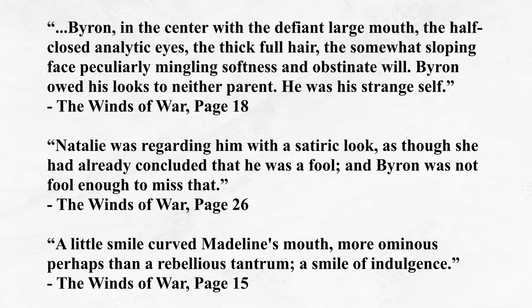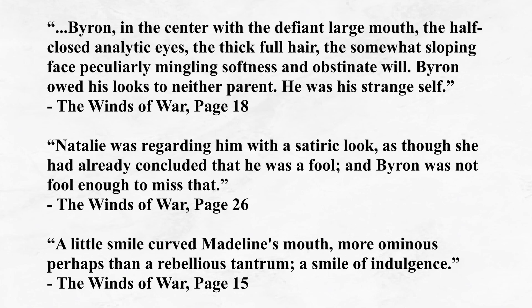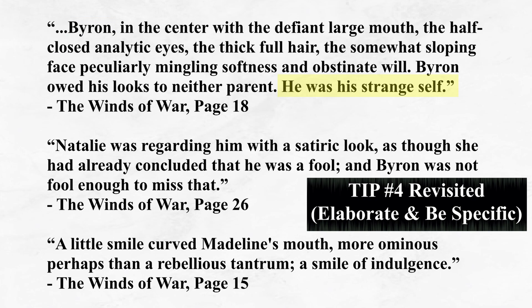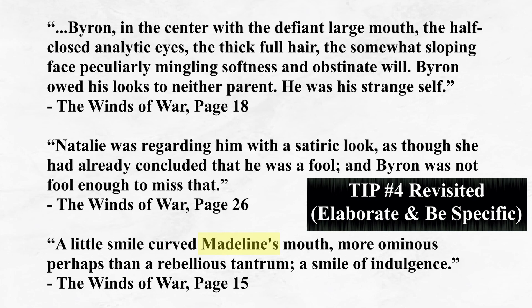The following three short excerpts are examples of how Wouk describes nuanced attributes and expressions. 'Byron, in the center with the defiant large mouth, the half-closed analytic eyes, the thick full hair, the somewhat sloping face peculiarly mingling softness and obstinate will — Byron owed his looks to neither parent. He was his strange self.' 'Natalie was regarding him with a satiric look, as though she had already concluded that he was a fool, and Byron was not fool enough to miss that.' 'A little smile curved Madeline's mouth, more ominous, perhaps, than a rebellious tantrum — a smile of indulgence.' In all three examples, Wouk begins with a surface description, then elaborates with specific insight. Byron's peculiar appearance is summed up with 'he was his strange self'; Natalie's expression is elaborated upon with a simile; and Madeline's smile is elaborated on not once but twice — first as more ominous than a rebellious tantrum, then narrowed to a smile of indulgence. This demonstrates insight on the part of the writer and offers the reader a peek beneath the surface layers of each character.